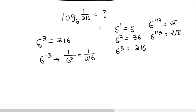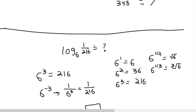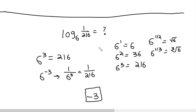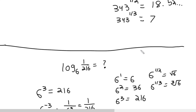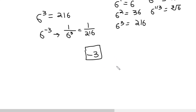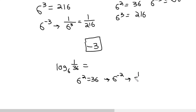So our answer is simply just negative 3. Going back: when the number is smaller than your base, you want to start thinking of fractional exponents. When you're taking the log of a fraction, you want to start thinking of negative exponents. For example, log base 6 of 1 over 36: since 6 squared equals 36, 6 to the negative 2 equals 1 over 36, so the answer is just negative 2.